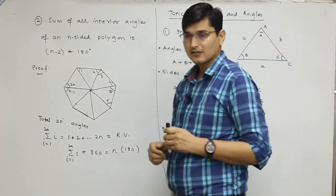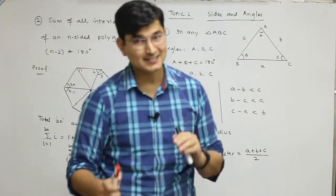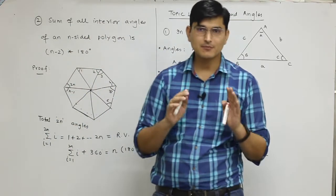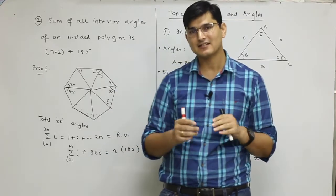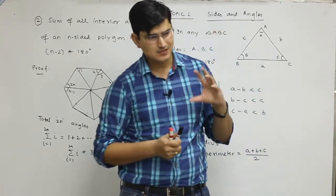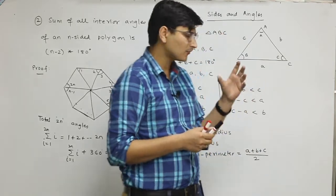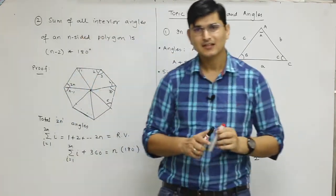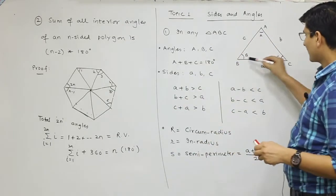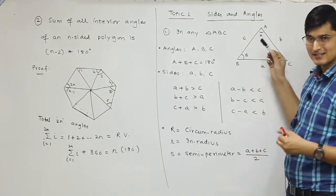Sides and angles. Triangles' first topic is sides and angles. In this topic we will study what is the relationship between sides and angles and some of the inequalities in triangles. So first we will define the triangle. Triangle has three sides and three vertices, three angles.